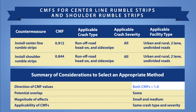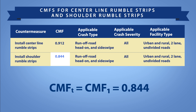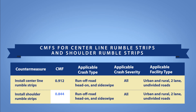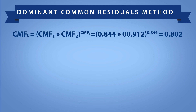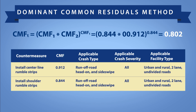Both CMFs are less than 1. There is some potential overlap in the countermeasure effects, the magnitude of the effects are small and medium, and the CMFs apply to the same crash types and severities. Based on these considerations, either the dominant effect or dominant common residuals method is appropriate, whichever produces the greatest reduction. CMF1 is the smallest CMF, 0.844, and CMF2 is the second smallest CMF, 0.912. The dominant effect method assumes the CMF with the smallest value, 0.844. Applying the dominant common residuals method results in a combined effect of 0.802. In this case, the dominant common residuals method produces the greatest reduction and is used as the estimate.